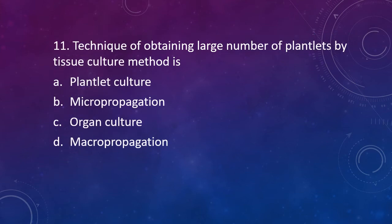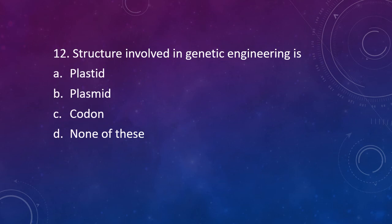Question 11: Technique of obtaining large number of plantlets by tissue culture method is called as — plantlet culture, micropropagation, organ culture, or macropropagation? The correct answer is Option B — Micropropagation.